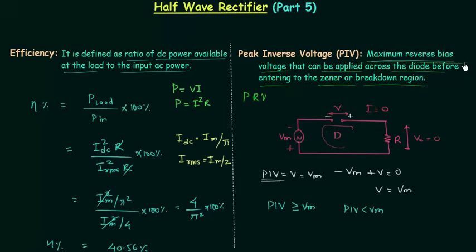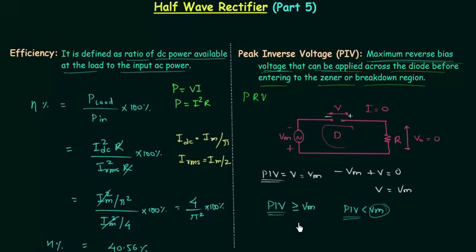Peak inverse voltage is the maximum reverse bias voltage that we can apply across the diode. In this case we are applying Vm across the diode, and if Vm is greater than the peak inverse voltage, the diode will be damaged. To protect the diode and retain its properties we have to make PIV greater than or equal to Vm. This is a very important condition. Peak inverse voltage is equal to Vm, the peak value of the source voltage.